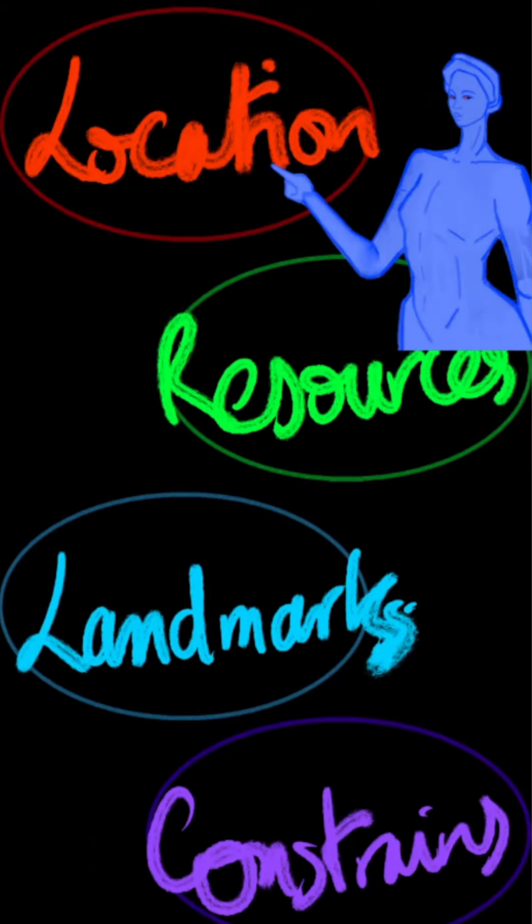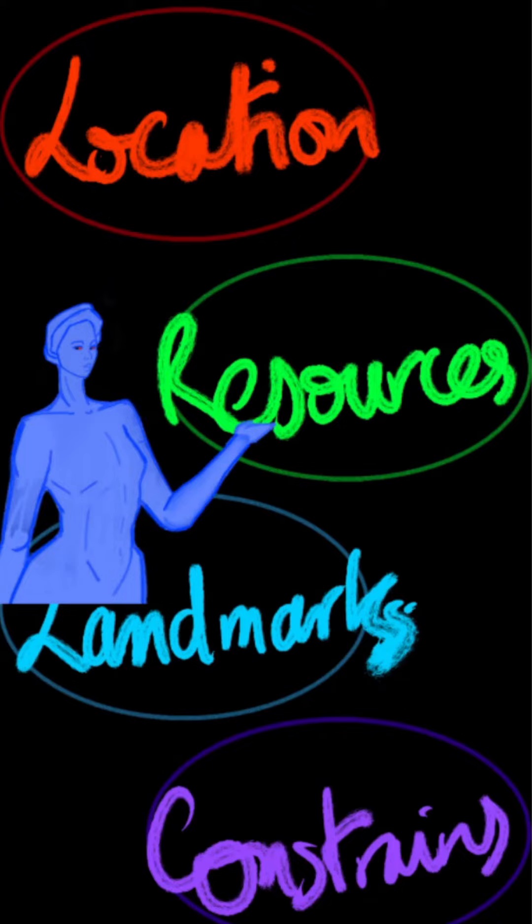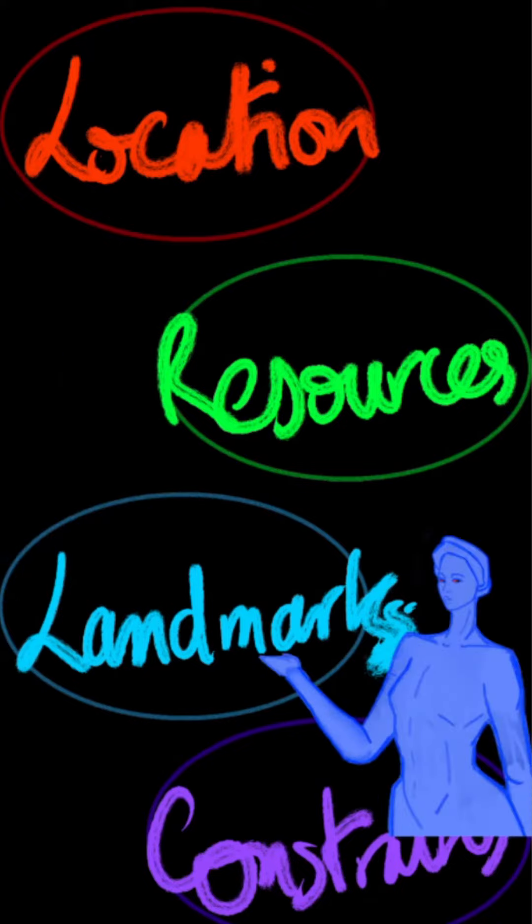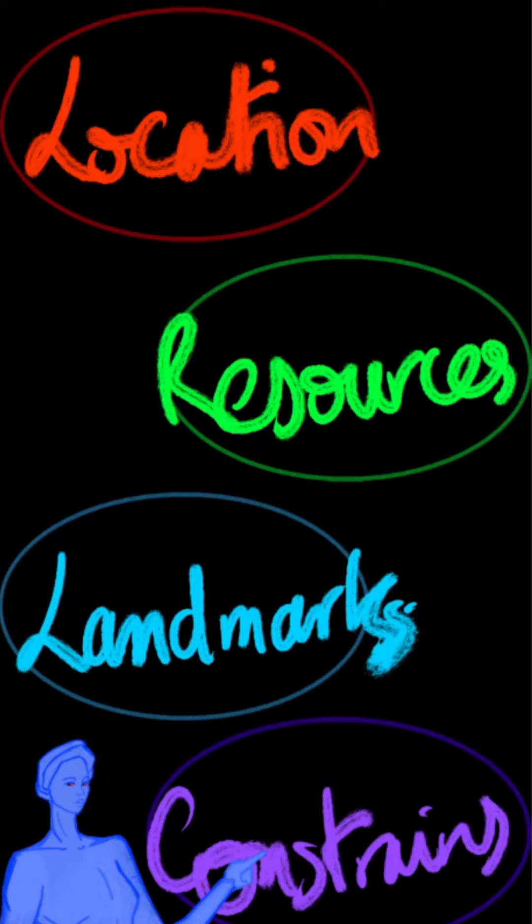Draw the location where she is born. What resources are available? What makes them unique? Are there any landmarks and what do they look like? What are the constraints specific to the zone and how do they affect the character?